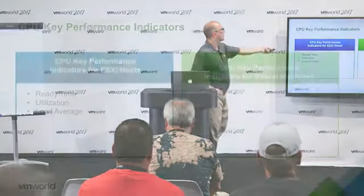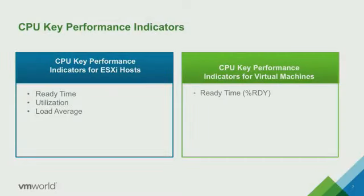On the virtual machine side, the percent ready time is when a process is waiting to get onto the CPU — it's ready to be scheduled, waiting for someone else to finish. Then you have percent co-stop. If it's above 3%, that's a problem, which tells you something specific about your vCPU configuration.